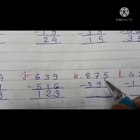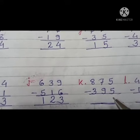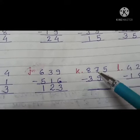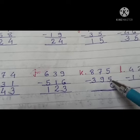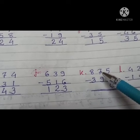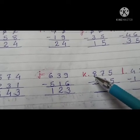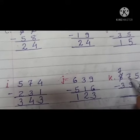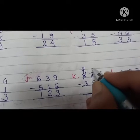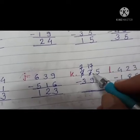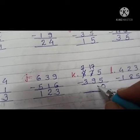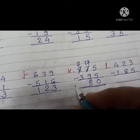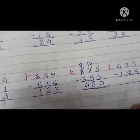Next K: 875 minus 395. Subtract ones first: 5 minus 5 equals 0. Next, tens: 7 minus 9. We cannot subtract 9 tens from 7 tens. So we will borrow 1 hundred from the hundreds column. 8 becomes 7 and 7 becomes 17. Now 17 minus 9 equals 8. And 7 minus 3 equals 4.